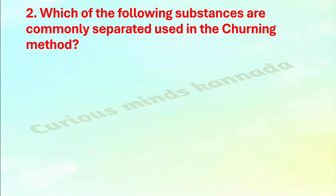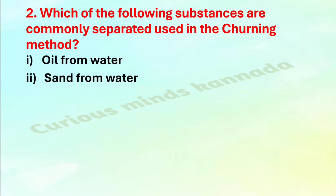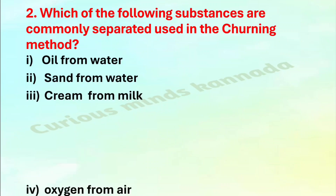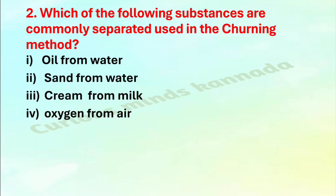Second question: Which of the following substances are commonly separated using the churning method? Option 1: oil from water. Option 2: sand from water. Option 3: cream from milk. Option 4: oxygen from air. The correct answer is option 3, cream from milk.